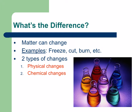What's the difference between a physical and a chemical change? When we talked about properties, we talked about physical properties being something that you could observe with your five senses, and chemical properties describing how something would behave. For physical and chemical changes, it's about whether the matter is new or the matter is the same.